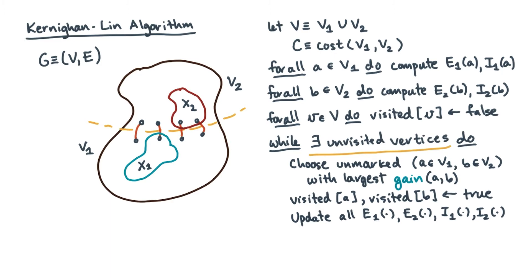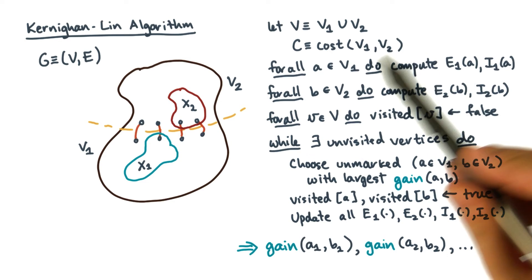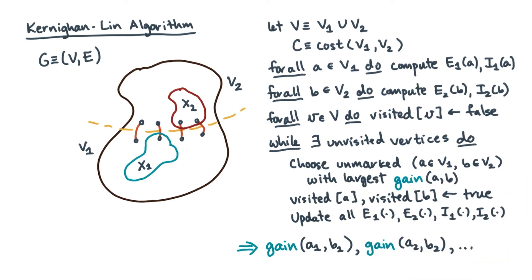At this point, the algorithm has computed a sequence of gains. That is, this is the first part of the algorithm and the output of the first part is the sequence of gains. Now for the next part of the algorithm.